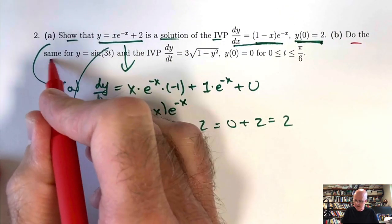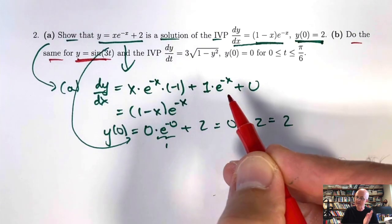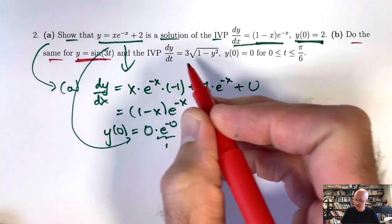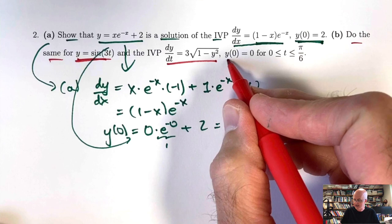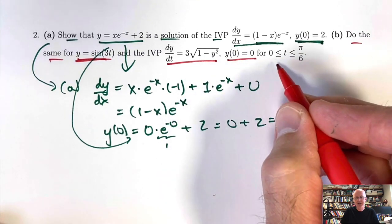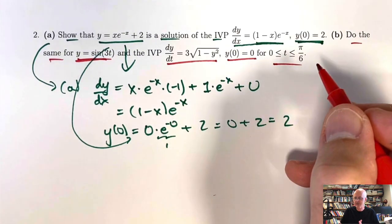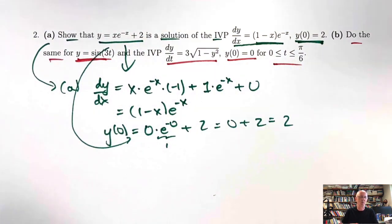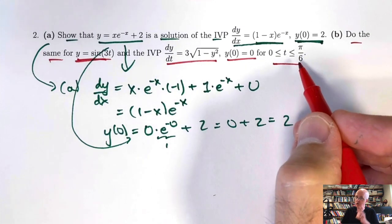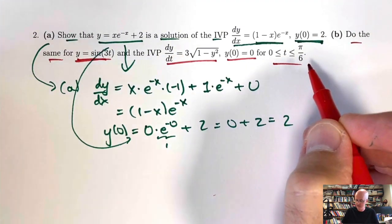Part B: do the same kind of thing for y = sin(3t). We've gone back to t as the independent variable. This initial value problem has a specified interval of 0 to π/6, which seems kind of strange. We will see why this is one good choice — it's not the only choice that could have been made for the interval.